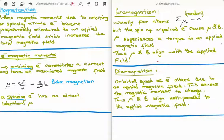Diamagnetism is when the orbital speed of an electron changes when we apply an external magnetic field. Because the speed changes, the magnetic moment and associated field change. The important point is that the direction is different: for an electron, the charge is minus q. That means the new, changed magnetic field will be opposite in direction to the applied field. For paramagnetism the magnetic moments align parallel to the external field, but with diamagnetism they align anti-parallel and try to cancel the applied field.